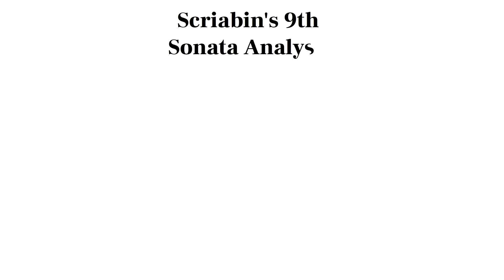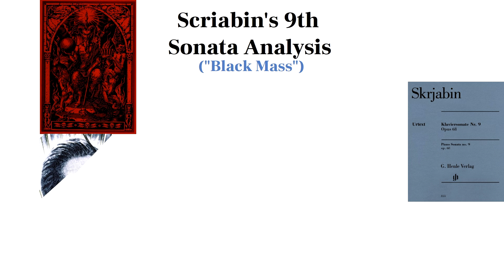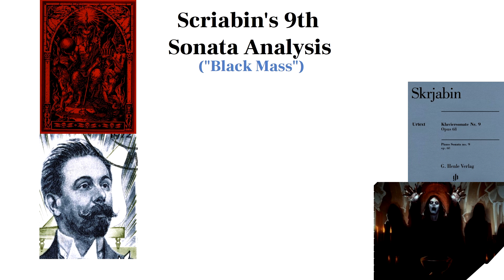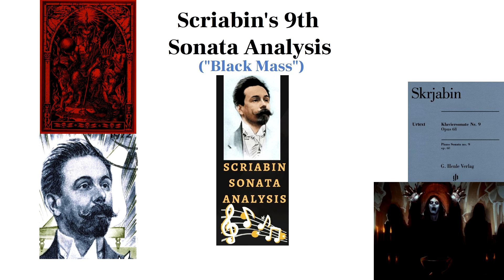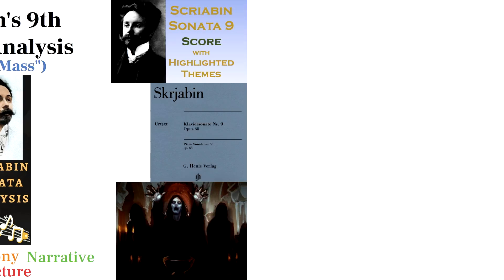Scriabin's 9th Sonata is nicknamed Black Mass as a contrast to Sonata 7's nickname White Mass. It's Scriabin's most refined and perfected dark evil-themed piece in my opinion. In this Sonata Analysis video, we'll be analyzing Sonata 9 in terms of motifs, harmony, narrative, and structure. Afterwards, you can listen to the piece using my video of the score with highlighted themes.